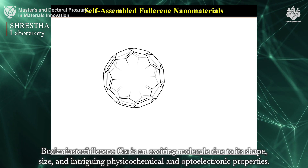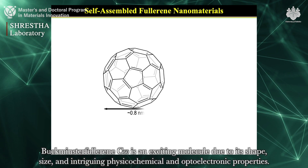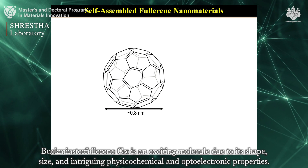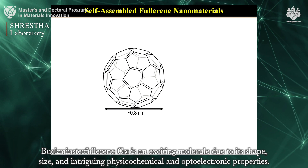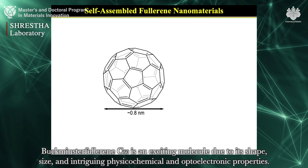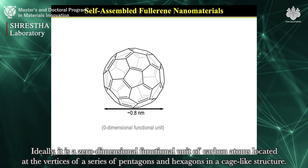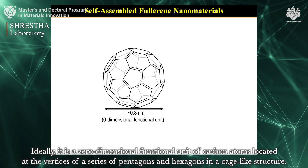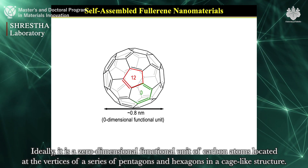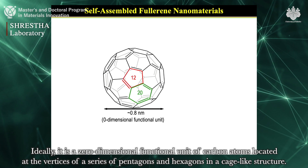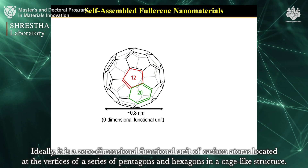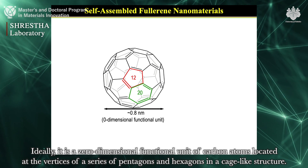Buckminster Fullerene is an exciting molecule due to its shape, size, and intriguing physicochemical and optoelectronic properties. Ideally, it is a zero-dimensional functional unit of carbon atoms located at the vertices of a series of pentagons and hexagons in a cage-like structure.